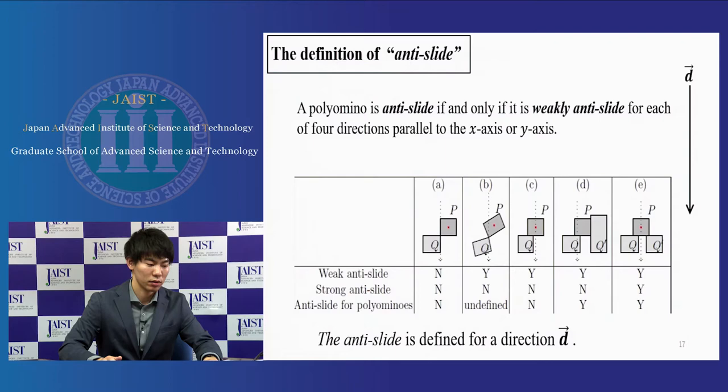This is some representative examples. We define another notion strongly anti-slide in our paper. It means the center of gravity point of polygon P is supported from below by polygon Q and Q'. This notion is needed when we consider the 3D version of the anti-slide puzzles. Especially, we note that the case of D is not strongly anti-slide.